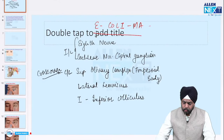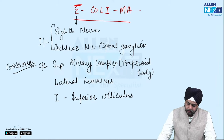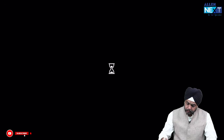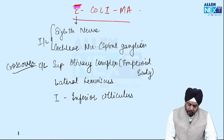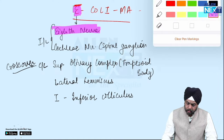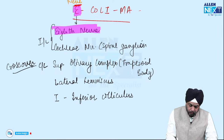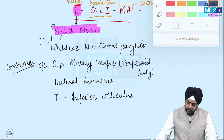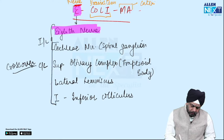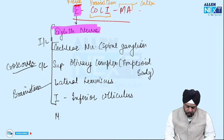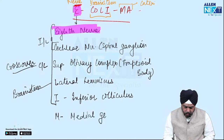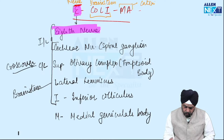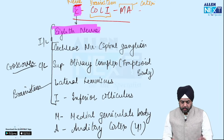Then we have L for lateral lemniscus, and I for inferior colliculus. So remember the mnemonic E.CoLiMa: E is the nerve, Coli is the brainstem, and Ma is the cortex. M is medial geniculate body, and A is auditory cortex — Brodmann's area 41. This you have to remember.